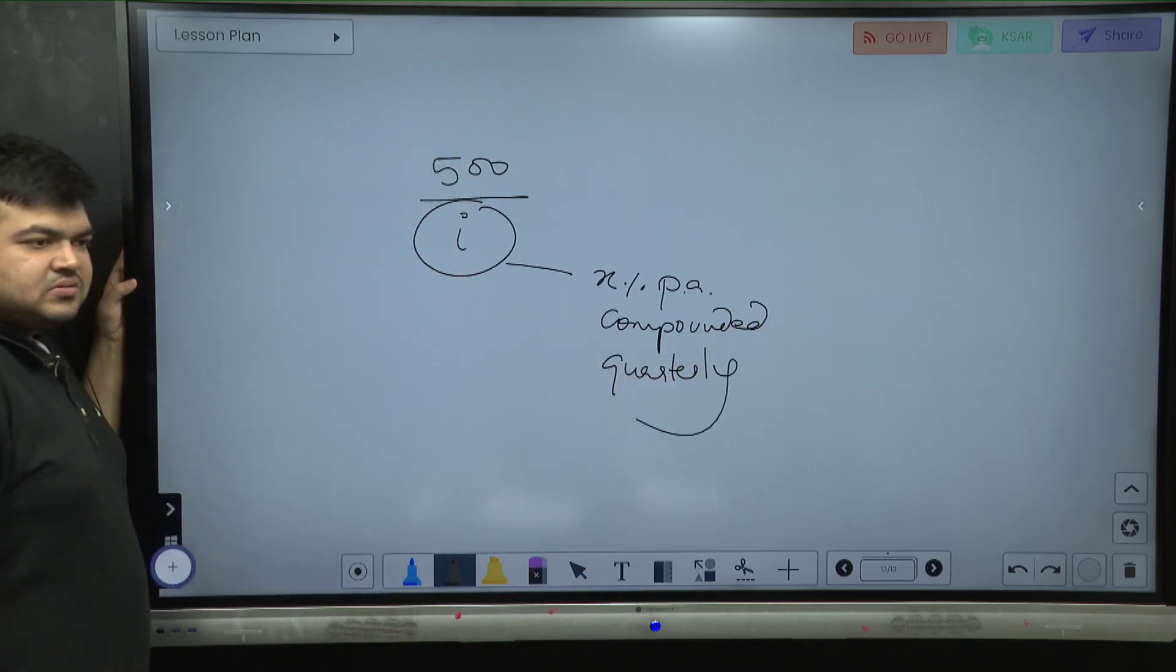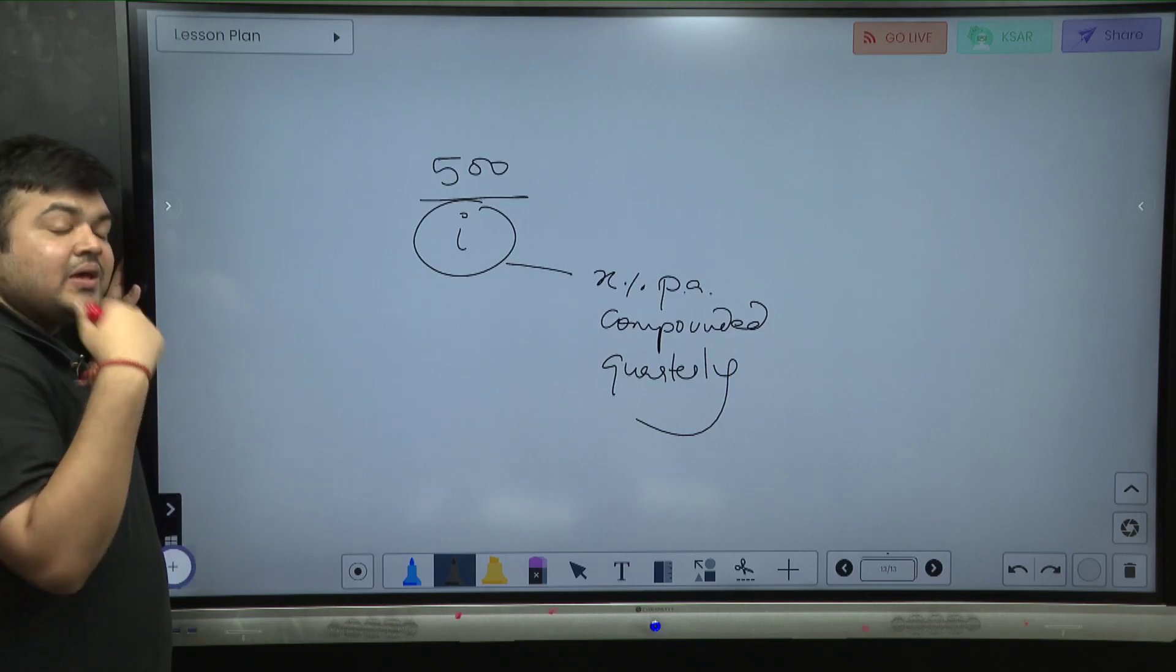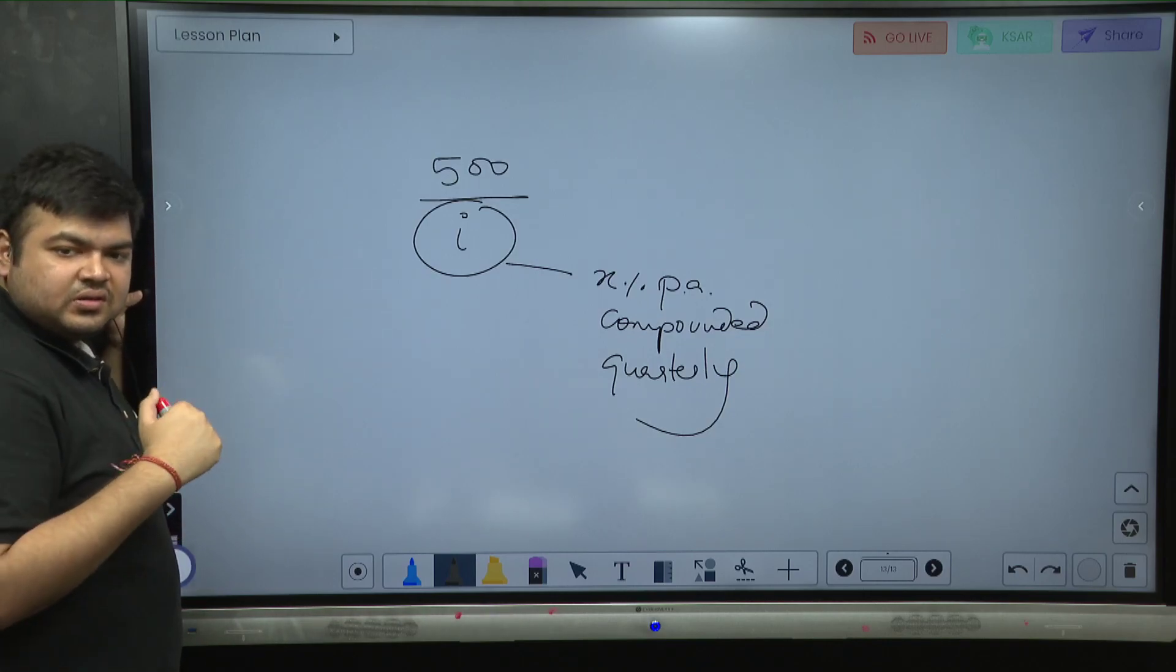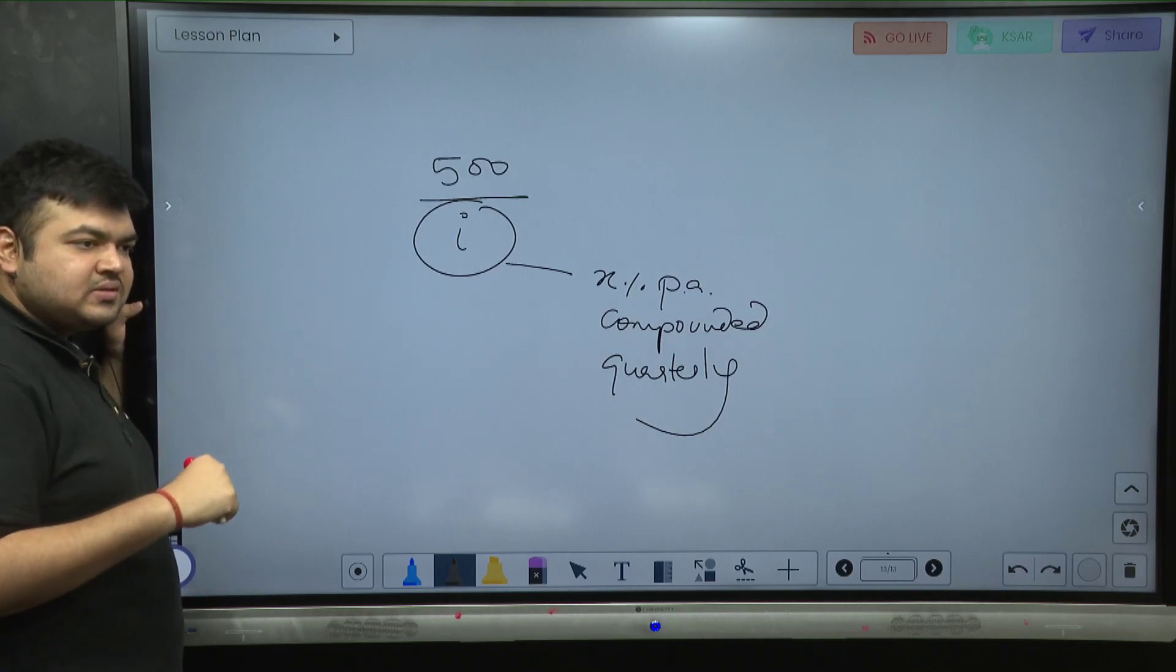I can do x by 4 and put the rate over here, because my cash flow is on a quarterly basis. So if I know what is the rate per quarter, I can get this answer done.